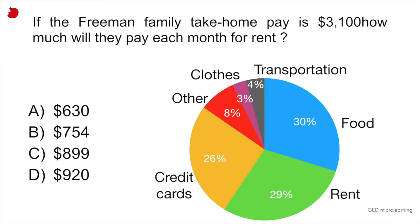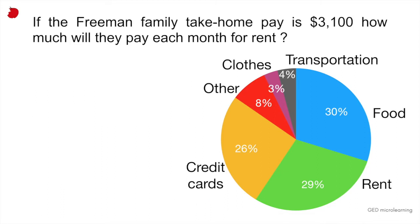The question says, if the Freeman family's take-home pay is $3,100, how much will they pay each month for rent? What you have to do here is look at your pie graph and find that part of the pie that represents the rent. In this case, it's the green pie slice. The green slice is the rent, and it represents 29% of their money.